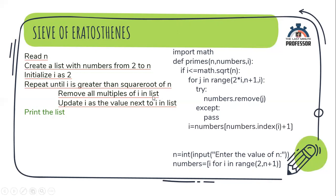After removing all the multiples of i in the list, what is our next task? Update i as the value next to i in the list. Now, I am finding the index of i. So, numbers.index of i will tell me the index where this current i value is present. Then I am adding it by 1 and finding the corresponding value. That is, I am finding the next i value, the next available prime number using this.